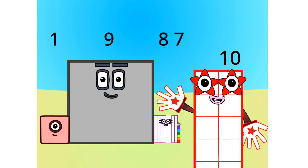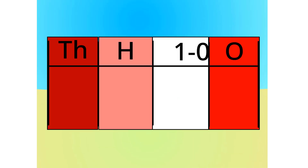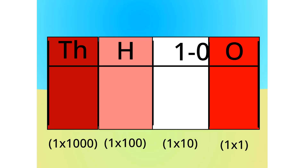As you can see, this number is 1 nine-hundred, 8 tens, and 7 ones. Let me carry on with the first method. Do you notice anything with this table? Correct — 1 times 1 equals 1, 1 times 10 equals 10. Because it multiplies by 10 each time, we call this system base 10.